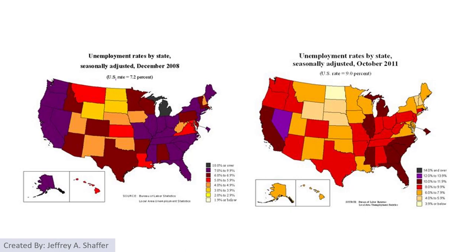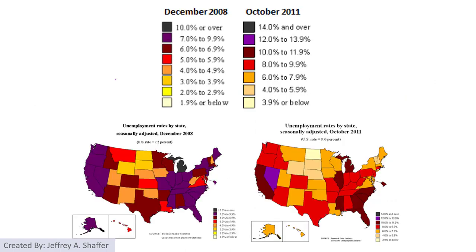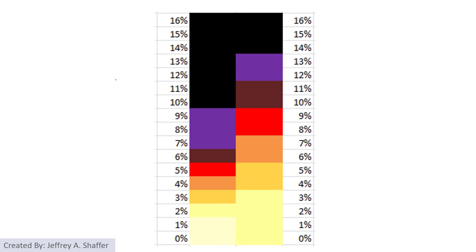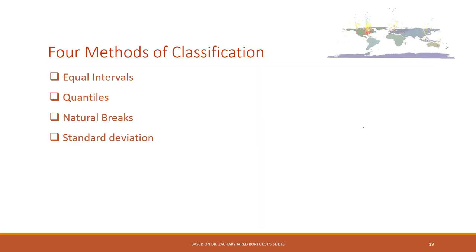Here we are looking at the unemployment rate for states in different years. Imagine you have a dashboard with two maps. Comparing the scales side by side, you can see they are using inconsistent scales — they are using the same color to represent different ranges. You can see the purple represents different scales.